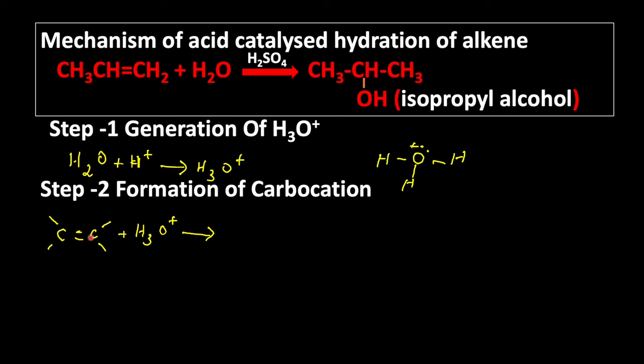This double bond in alkene is made up of one sigma bond and one pi bond. This pi bond is the weaker bond. This pi bond is attacked by the hydrogen of hydronium ion.